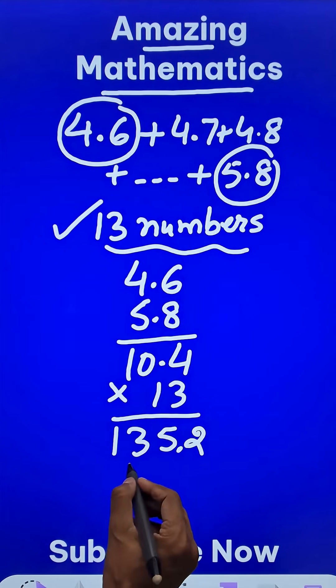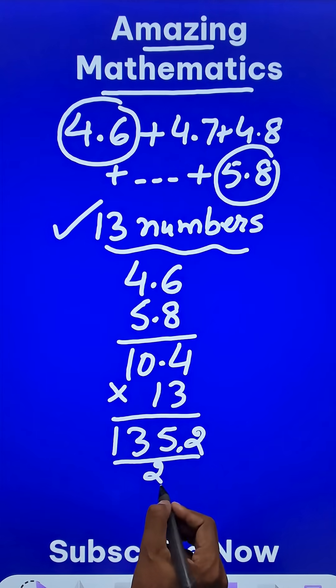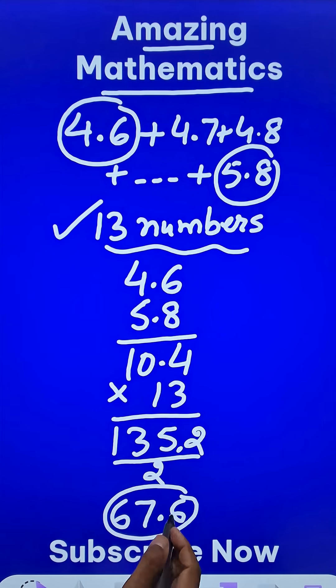So 135.2 and finally divide this result by 2 which is a fixed number. You get 67.6 as the final answer for the question.